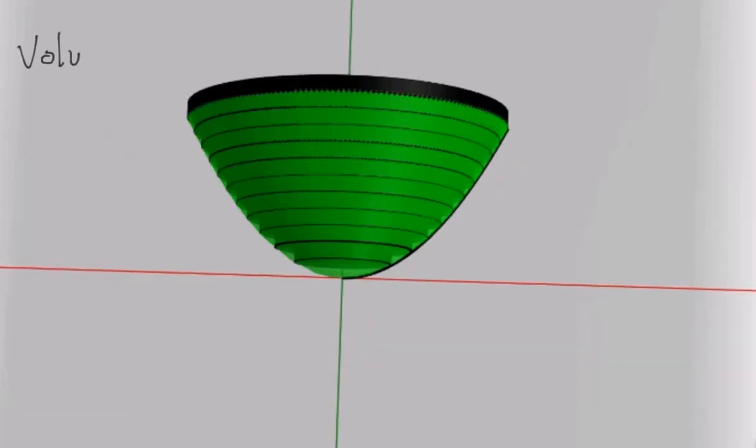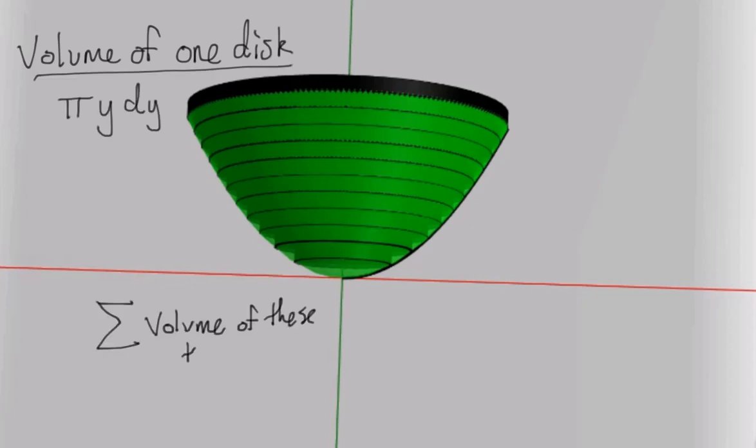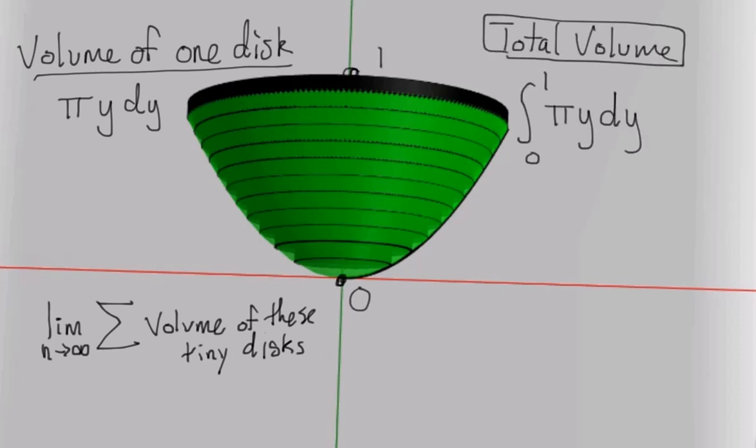To get an expression for the volume of the entire shape, we add up the volumes of all the discs, and let the number of discs go to infinity. This is exactly what the integral is. So we ditch the limit and the sigma for the sleek integral sign, leaving our volume formula under the integral, and indicating where we are starting and stopping.